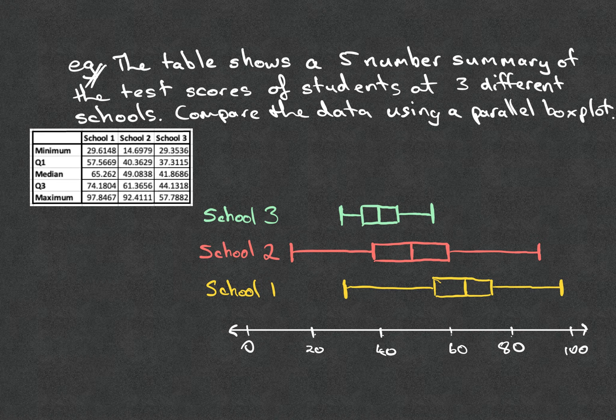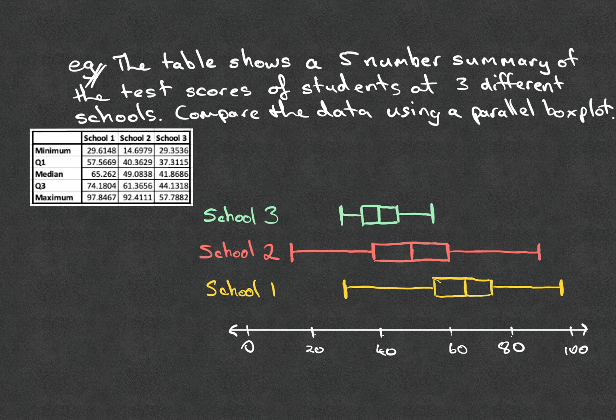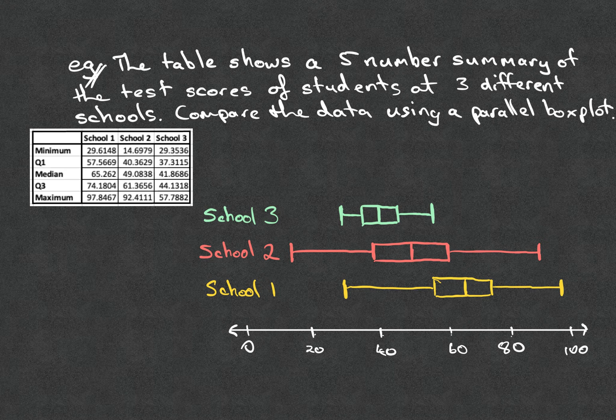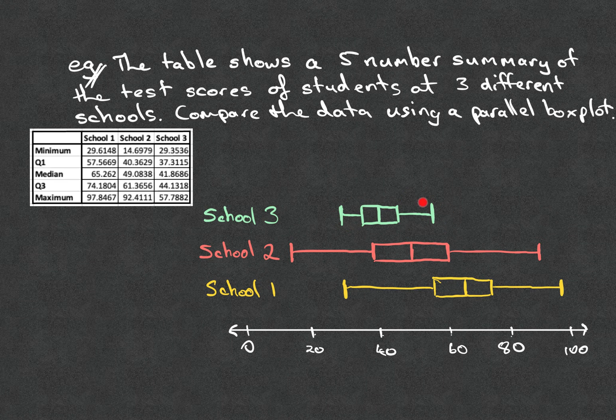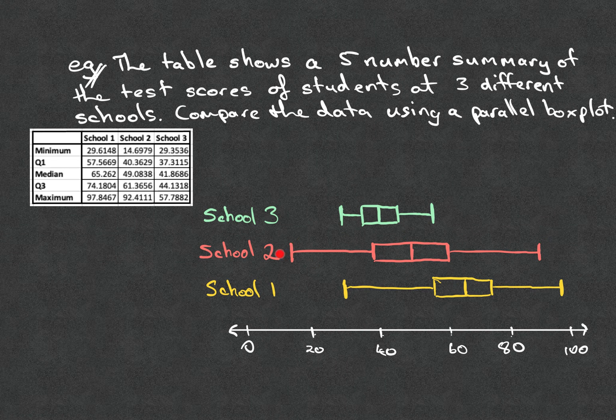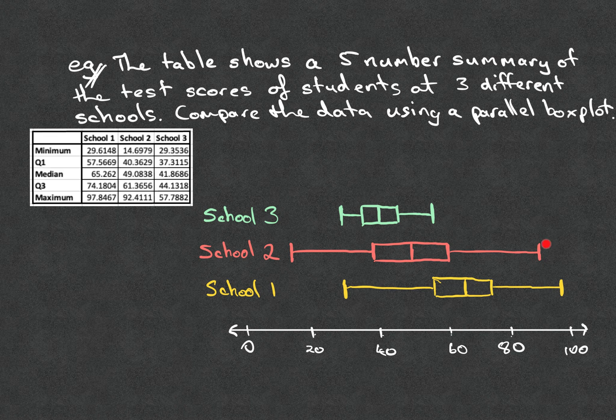And what you can see there then is the different ways that the data sets from the three different schools are spread across the possible range of scores. So imagining that this is a test you can score 0 to 100, you can see that School 3, their scores are quite clumped, whereas School 2 spreads really widely. So you can see there's some kids at School 2 scoring quite low scores and some scoring really high.